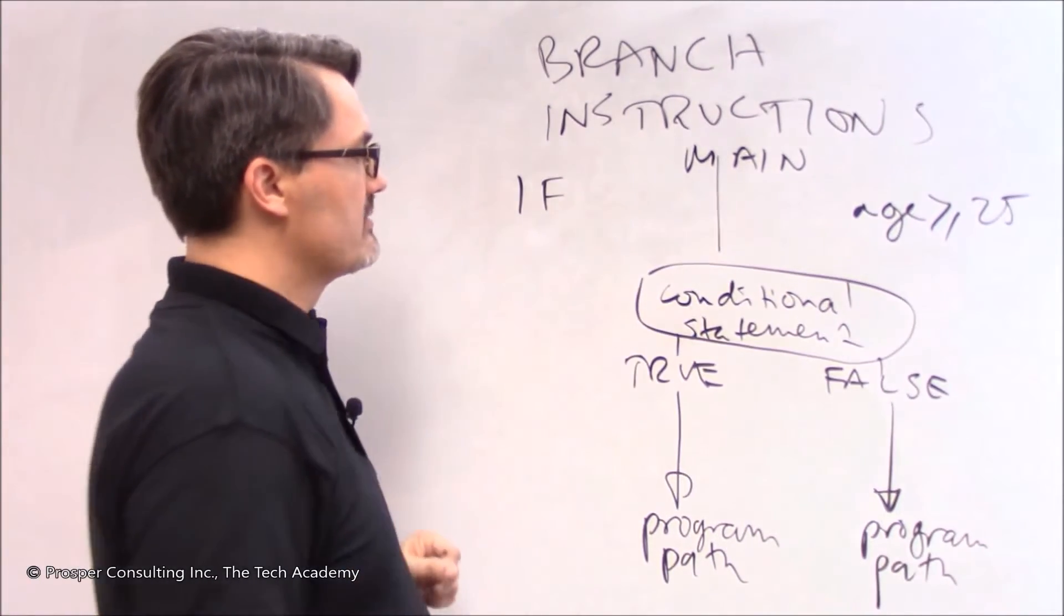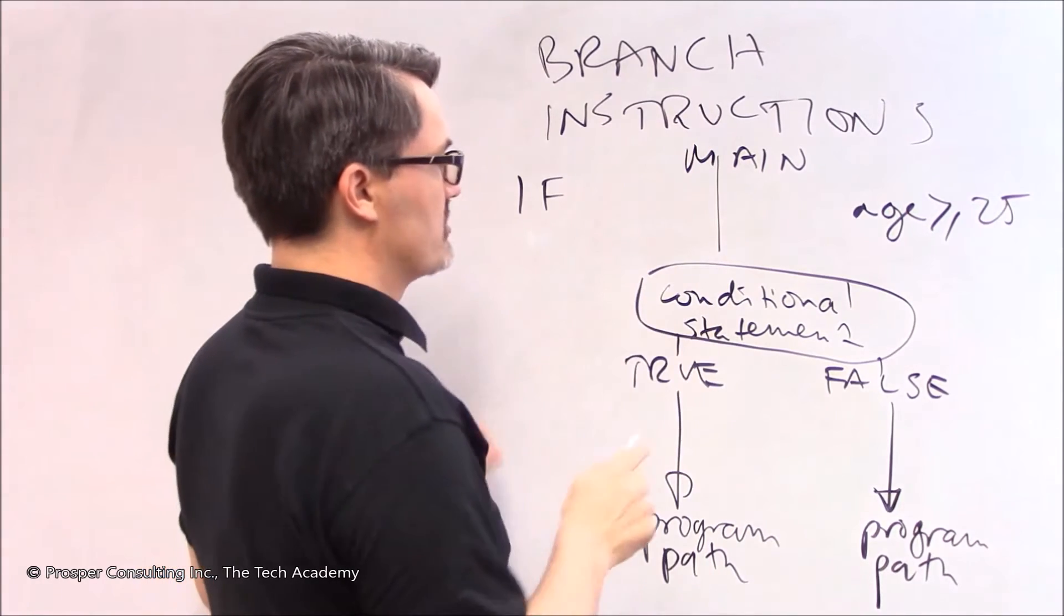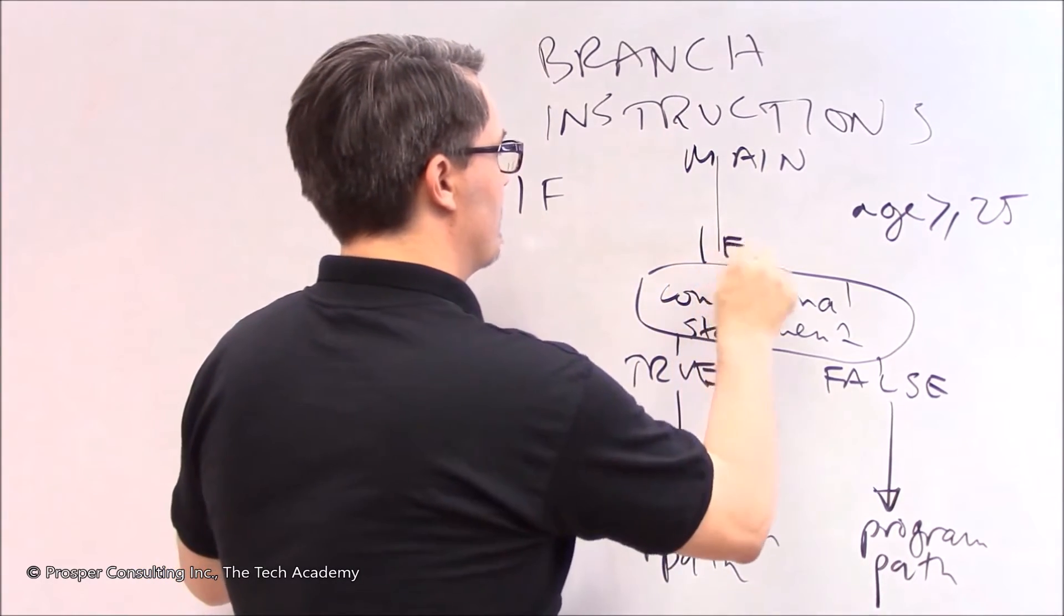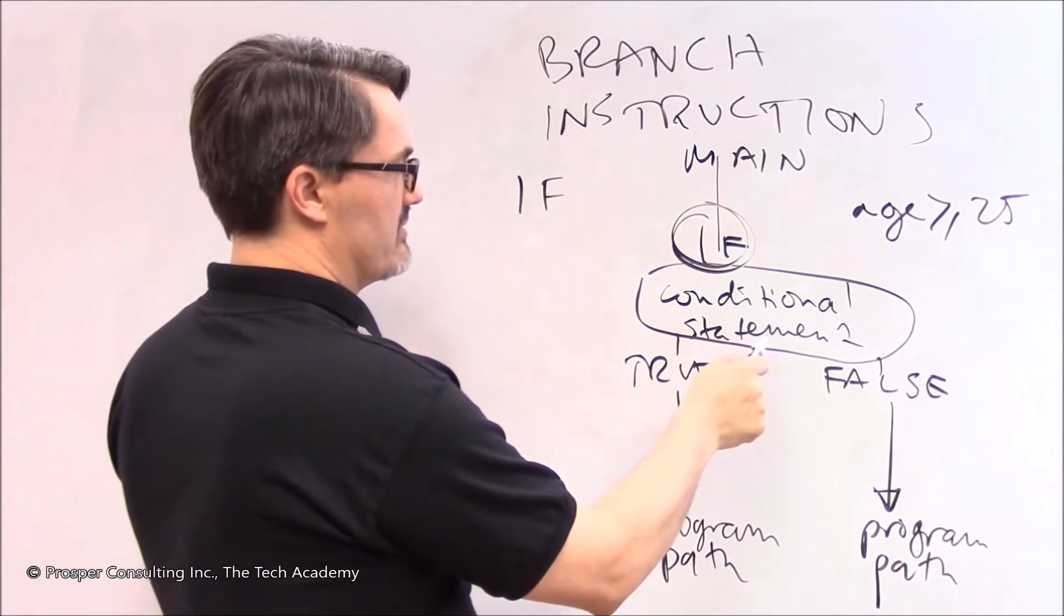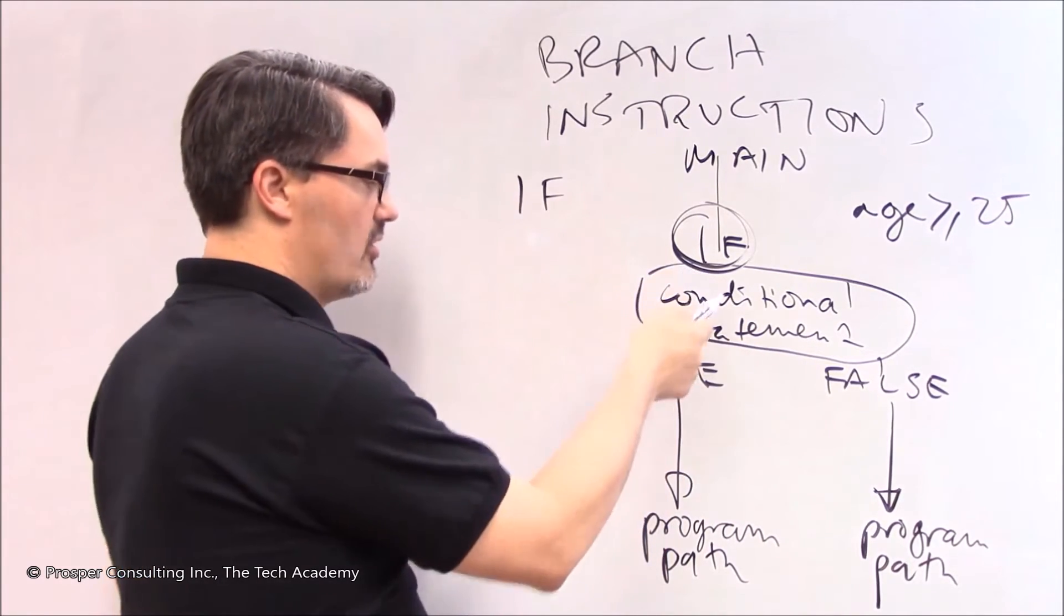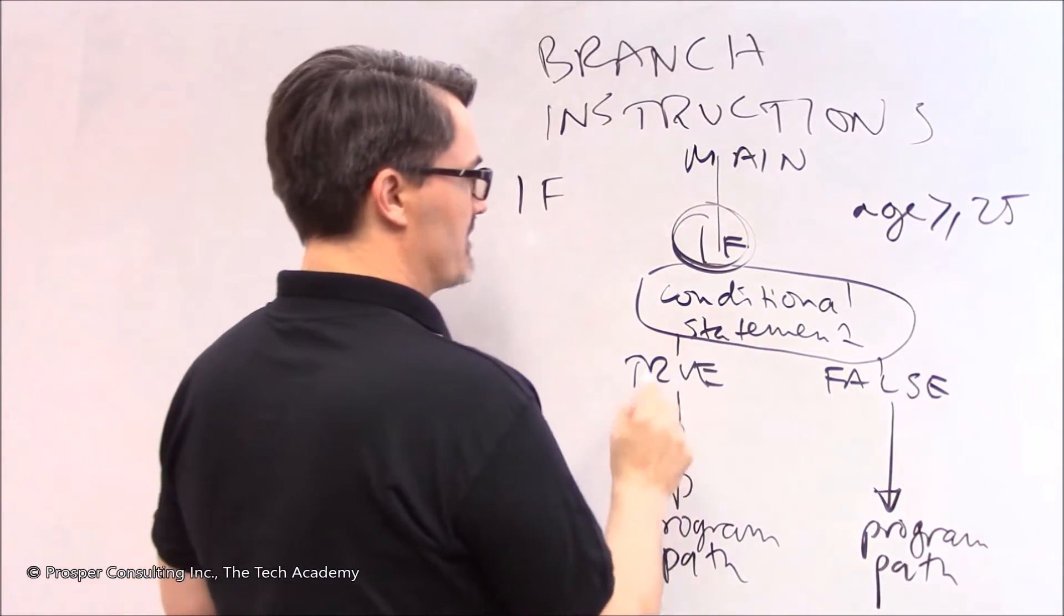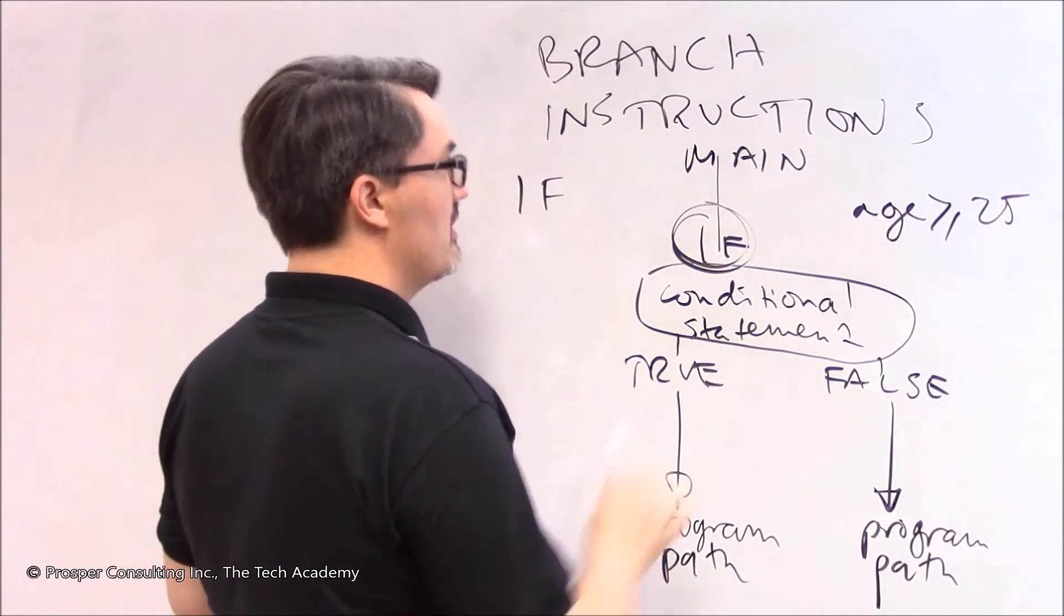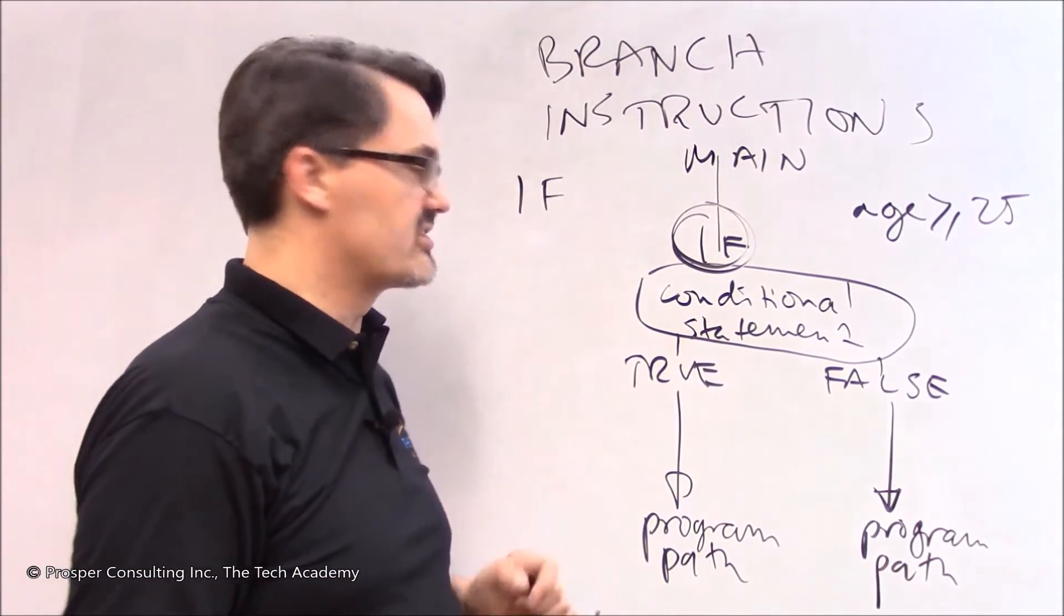You hit a conditional statement and there's a branch instruction and it says if and then checks the conditional statement and it branches or switches the path of execution based on whether or not that conditional statement checked was true or false. That's a diagram of how a branch instruction would work in coordination with conditional statements.